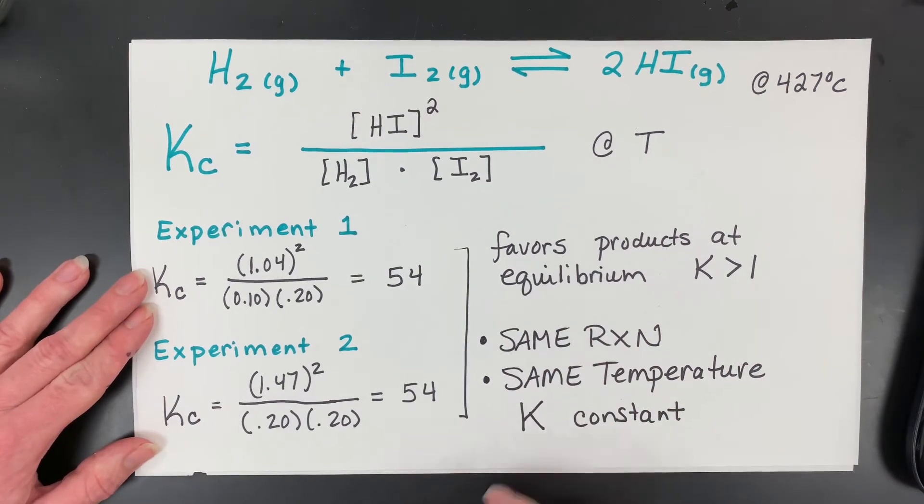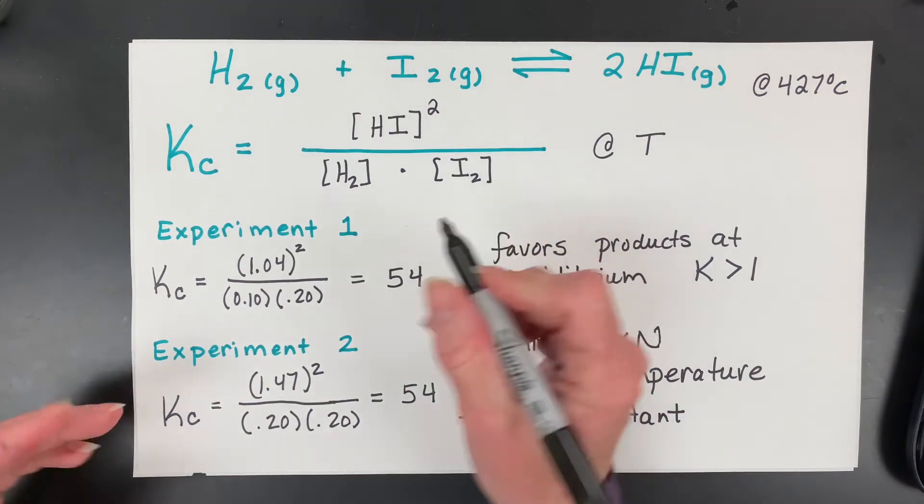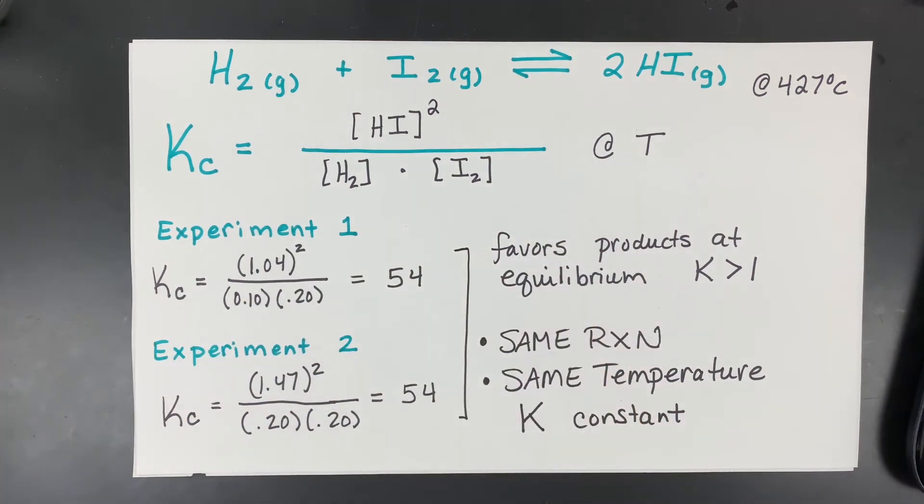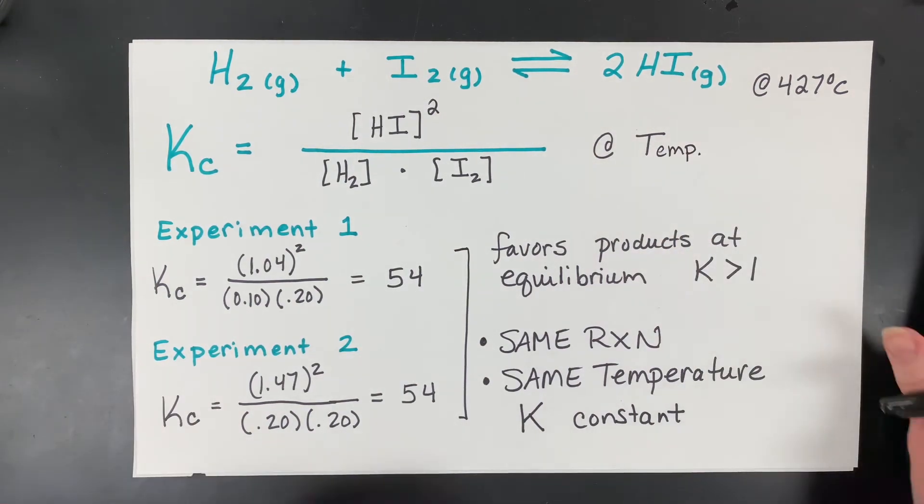That's why it's called an equilibrium constant. But here's the deal. I have to have the same reaction and I have to have it at the same temperature. This will be important when you get to Le Chatelier's principle. So we could do this with a lot of different numbers. In fact, you could even pick new numbers and make it a challenge to give other numbers that would give us basically 54 as the K value, as long as we keep this temperature the same.